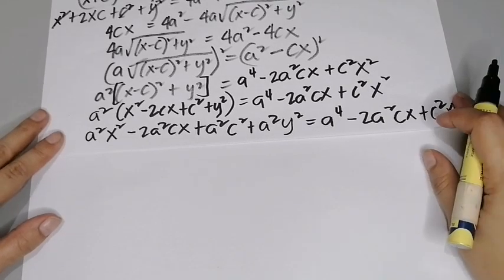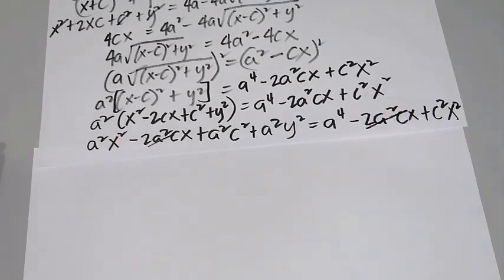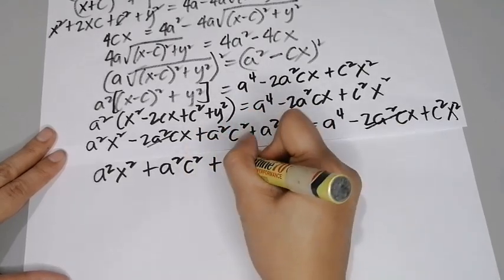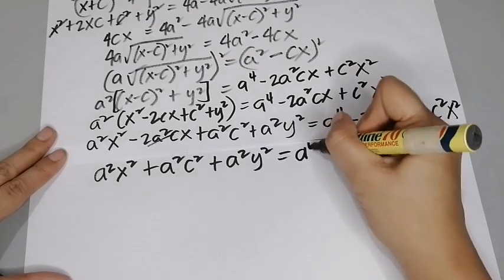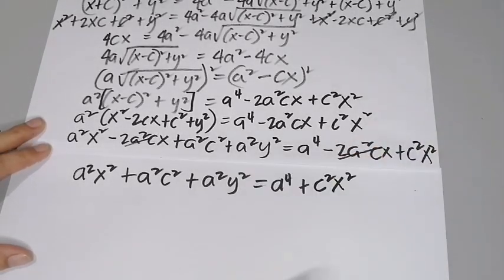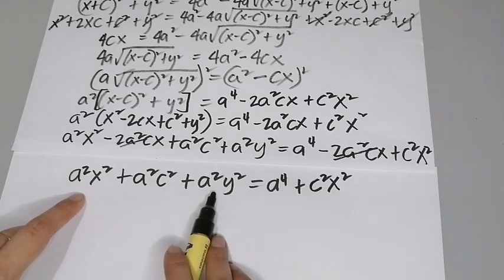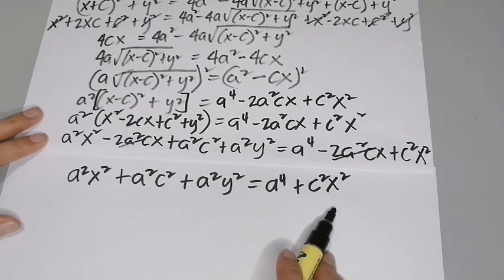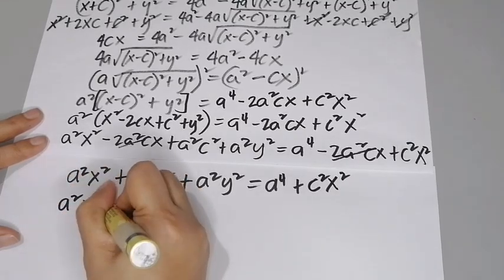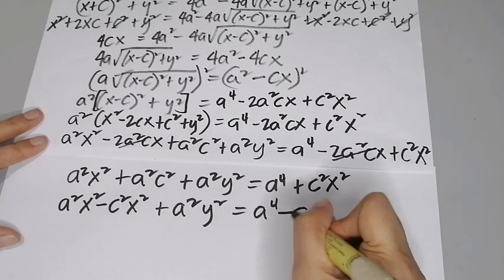We can cancel the −2a²cx terms from both sides. We are left with a²x² + a²c² + a²y² equals a⁴ + c²x². Moving all x² terms to the left and the remaining terms to the right gives a²x² − c²x² + a²y² equals a⁴ − a²c².